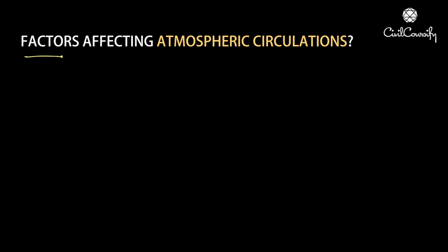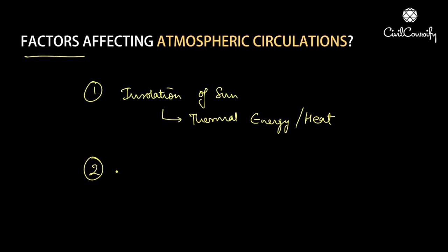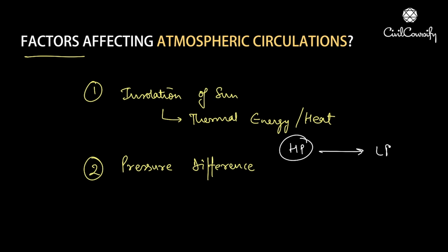What are the factors affecting atmospheric circulation? The first one is the insolation of the sun — you can relate this with thermal energy or heat energy. The second factor is pressure difference. Wind direction is from high pressure to low pressure.